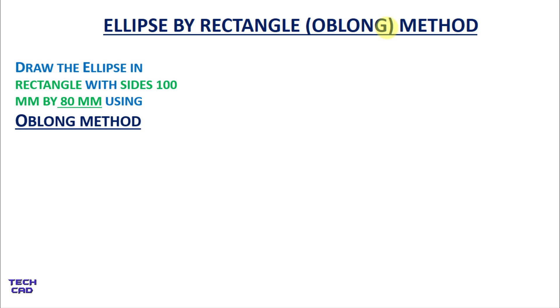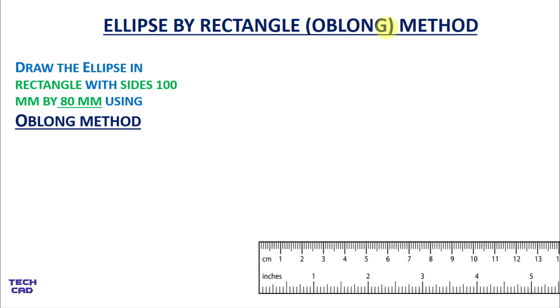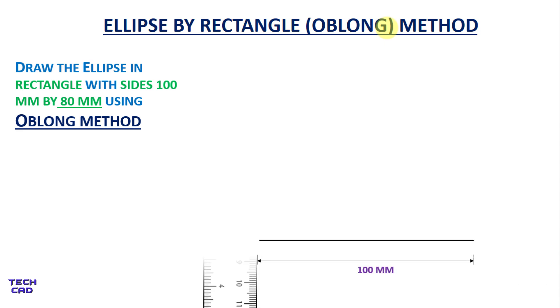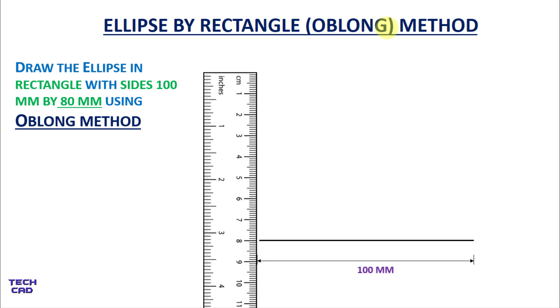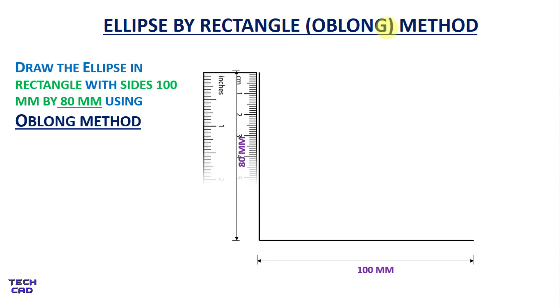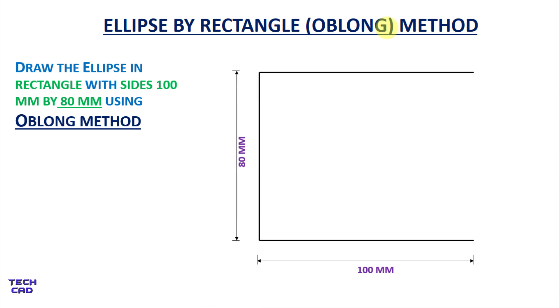So first of all we are going to make a rectangle. Take a scale and mark a line of 100 mm, again take a scale and mark a line of 80 mm. Now complete this rectangle — again 100 mm and 80 mm.